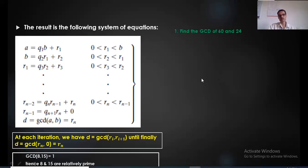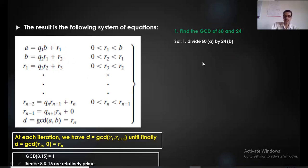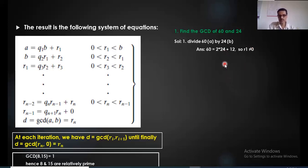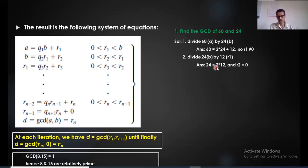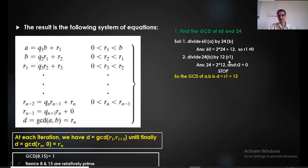Let's find the GCD of 60 and 24. First, divide 60 by 24: 60 = 2×24 + 12, so R1 = 12, which is not zero. Next, divide 24 by 12: 24 = 2×12 + 0. The remainder is 0, so we stop. The previous remainder R1 = 12 is the GCD. Therefore, GCD(60, 24) = 12.